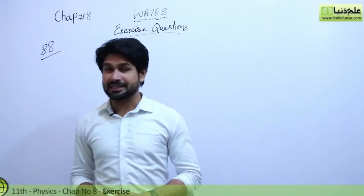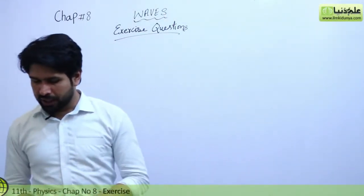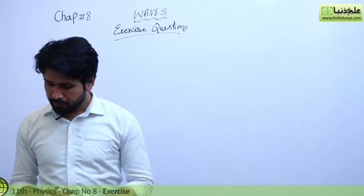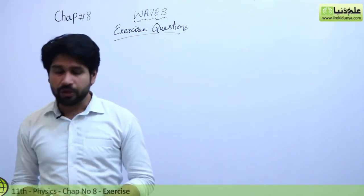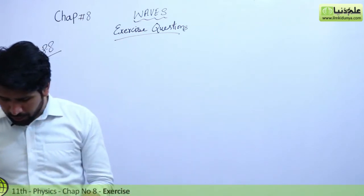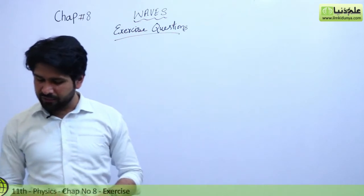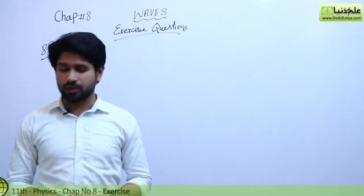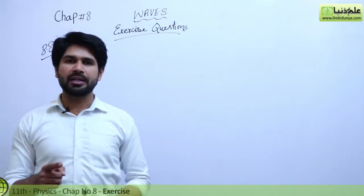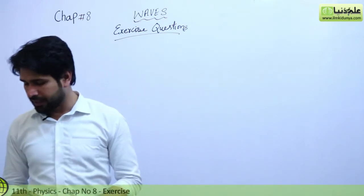Okay students, now we are going to discuss next XSA question 8.8. I am going to read the statement of this question: when two notes of frequencies f1 and f2 are sounded together, beats are formed. Given that f1 is greater than f2, what will be the frequency of the beats?